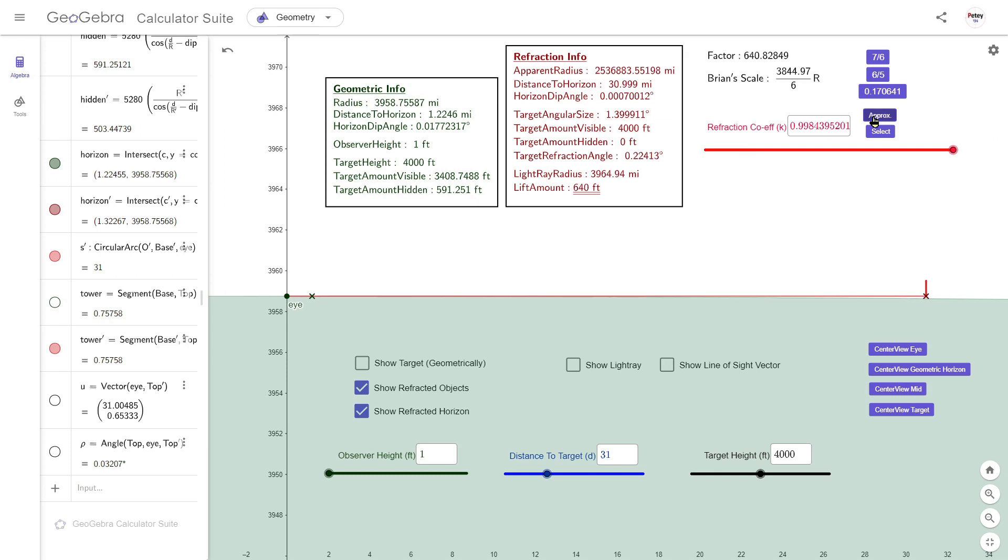So if I plug in the refraction factor that Brian calculated, we get a new refraction coefficient which is very close to 1. The target has lifted up about 640 feet. The observer's refracted horizon is now where the target is. And notice the apparent surface set by the effective radius. That's also lifted. Practically no lift at the observer. But it gradually increases along this 31 mile stretch.